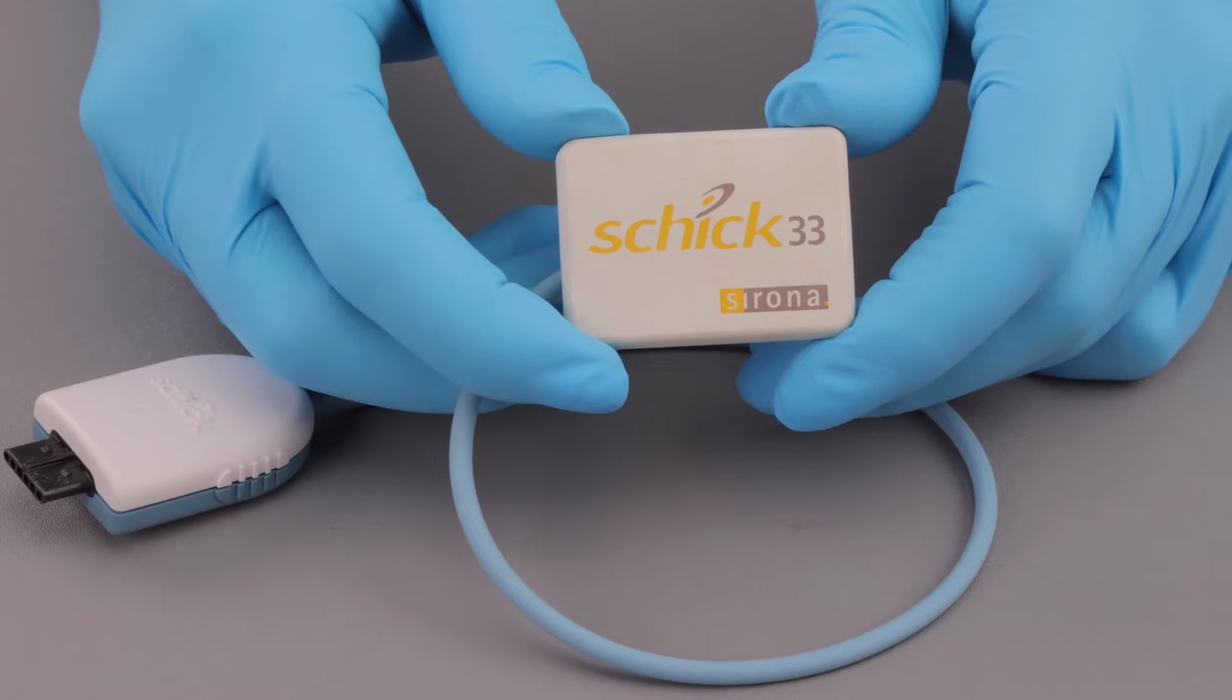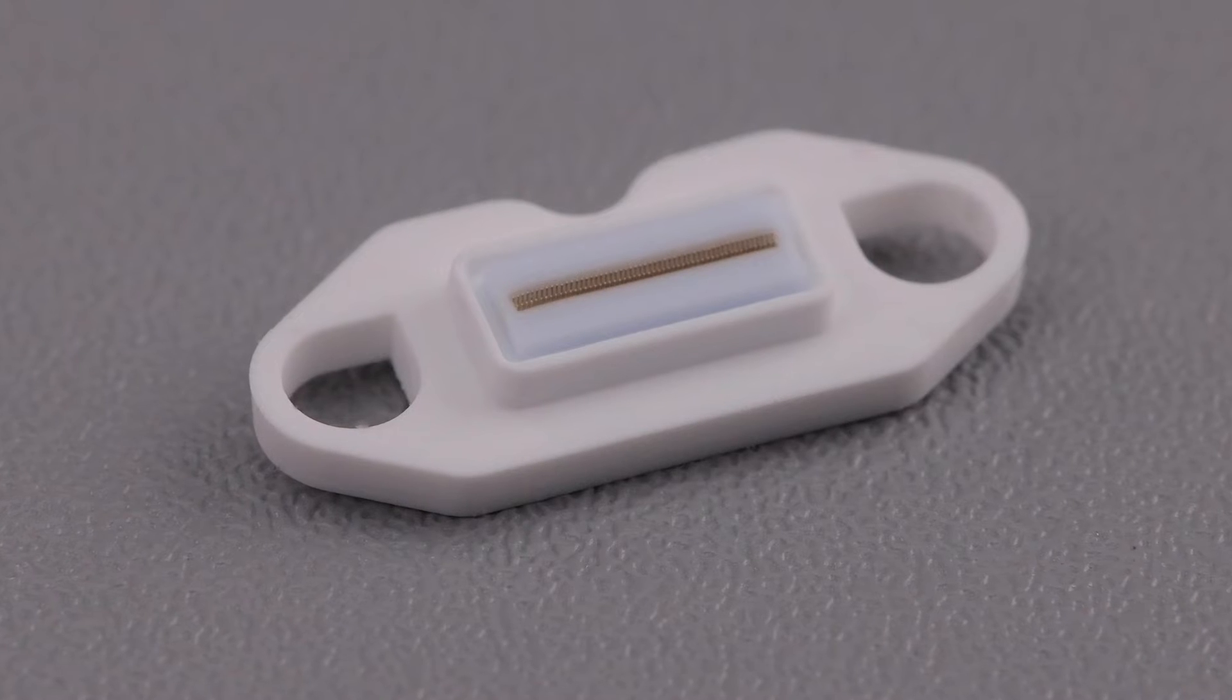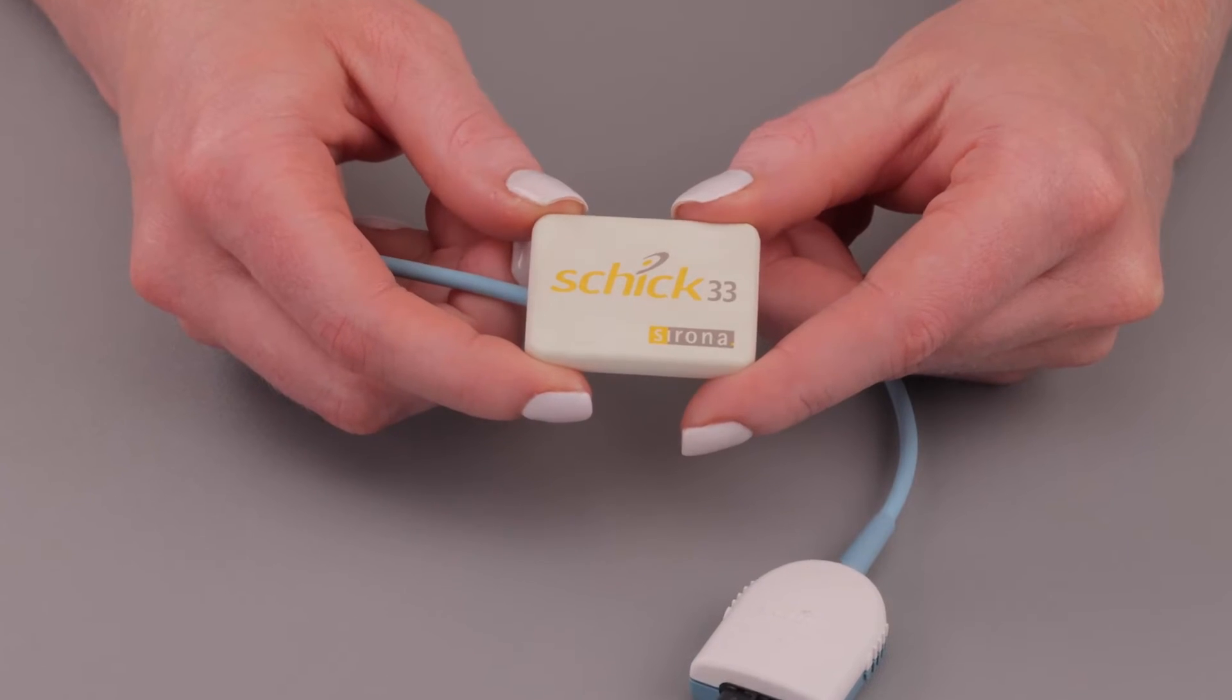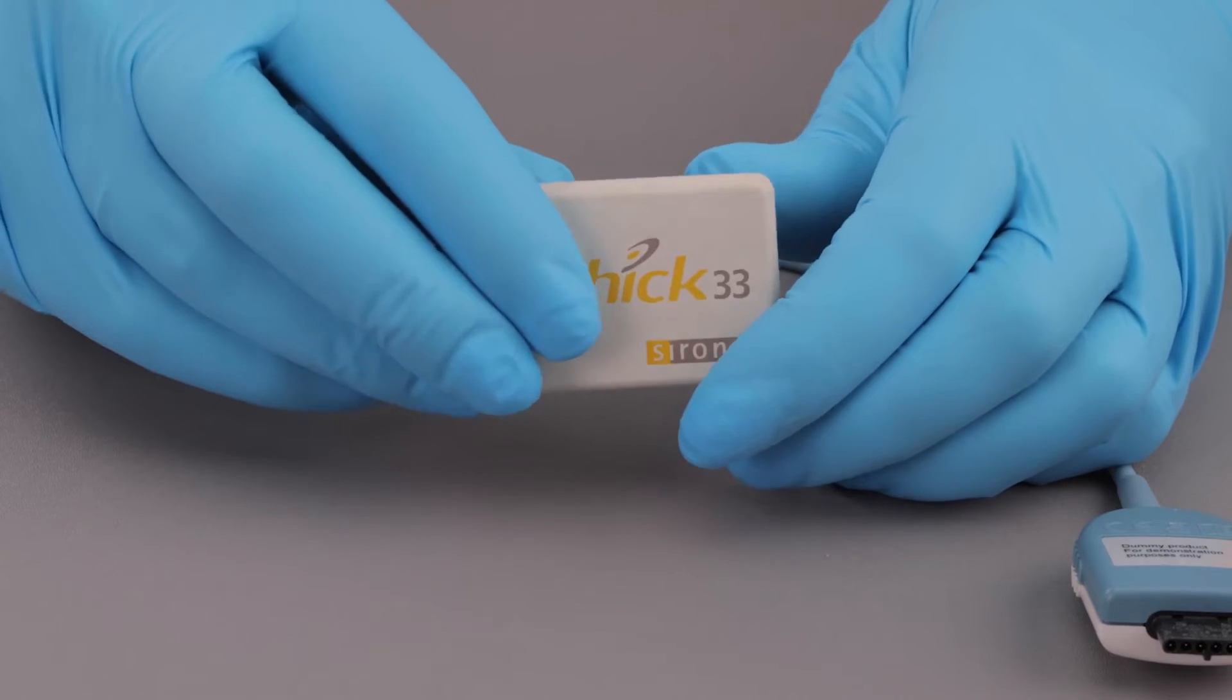First, check the sensor. Schick 33 sensors look similar to this and use white elastomeric strips. Please clean and dry your hands before performing this procedure. If you choose to wear gloves, they must be powder-free.